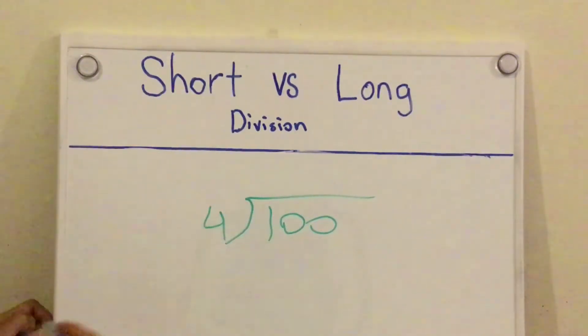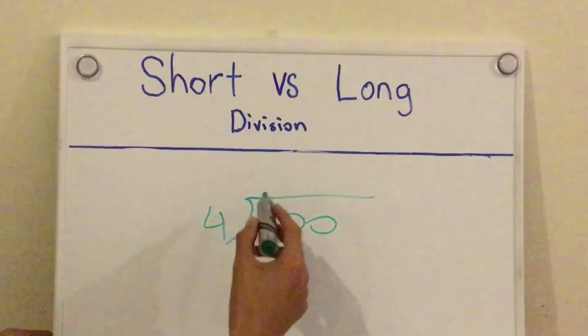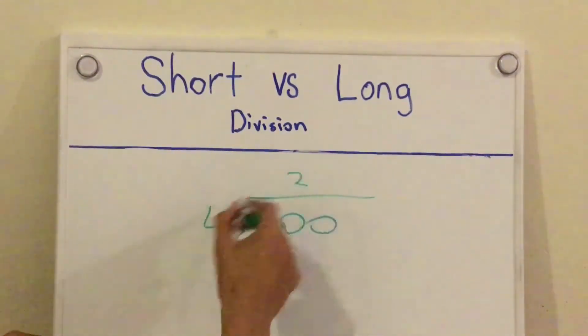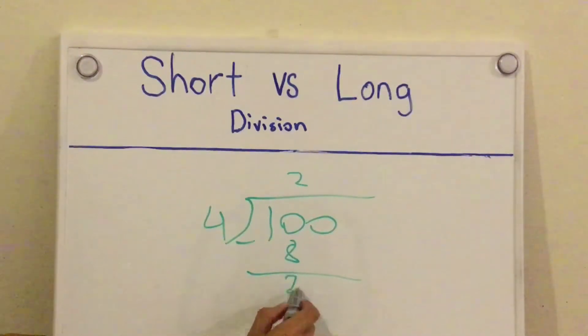So first of all, 1 divided by 4, you can't. So 10 divided by 4, we get 2. 2 times 4 is 8. Subtract, and 10 minus 8, you get 2.